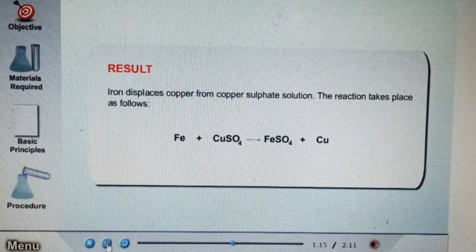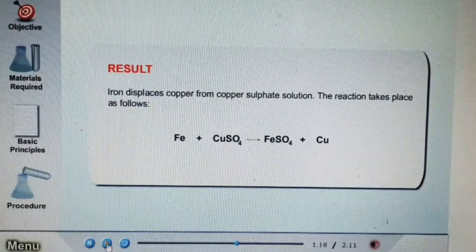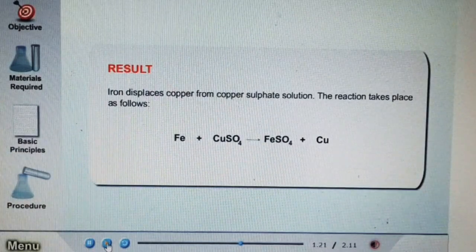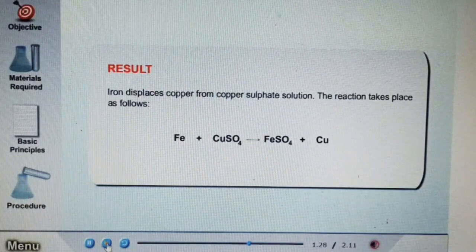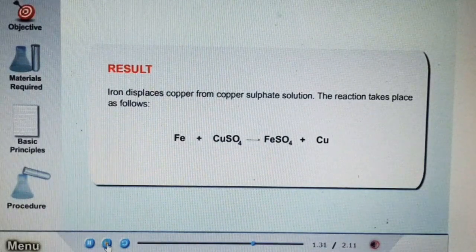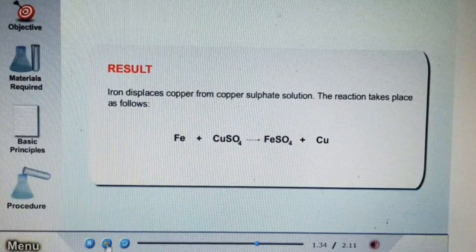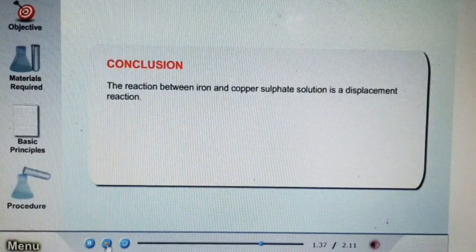Now let's see the result. Iron displaces copper from copper sulfate solution. The reaction takes place as iron reacts with copper sulfate. Iron sulfate is formed and copper is removed.